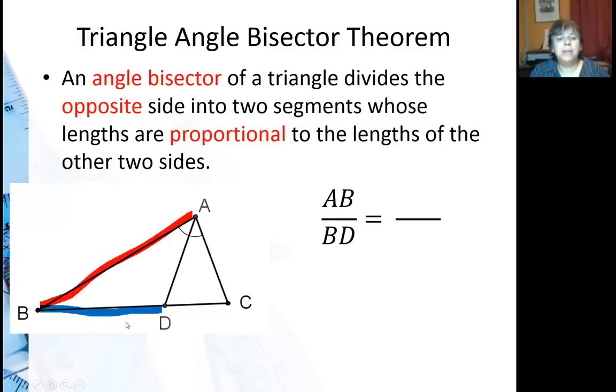So AB is going to be proportional to BD, and AC and CD, so if I say AB over BD, that's equal to AC over DC.